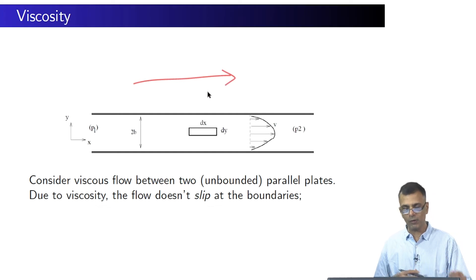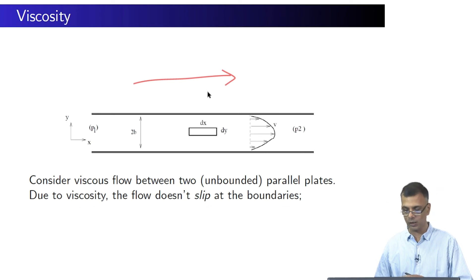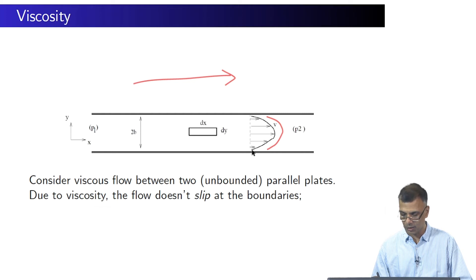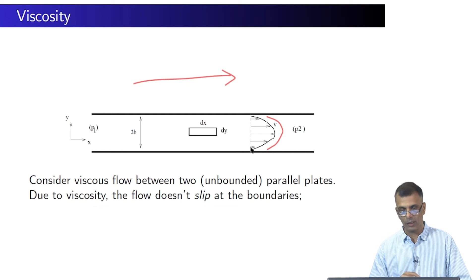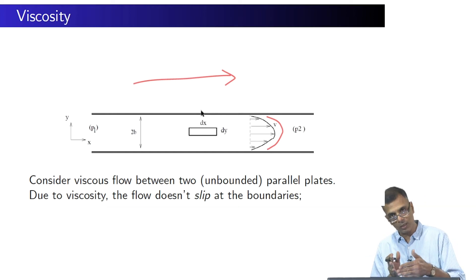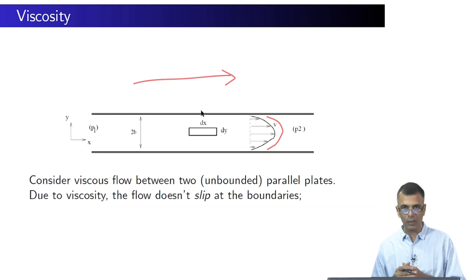Intuitively, you can appreciate the fact that the velocity profile of such a fluid would be parabolic. The velocity is largest at the center, it progressively decreases, and the fluid sticks to the boundaries. This is the whole point of viscosity — the flow does not slip at the boundaries.